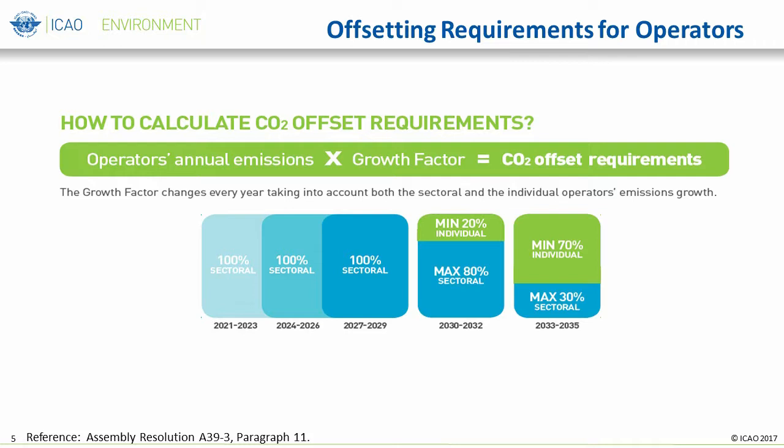However, from 2030 through 2032, a more dynamic approach will be implemented, where at least 20% of the aircraft operators' emissions growth will be used in calculating the operator's offsetting requirements in a given year. And from 2033 through 2035, the percent will increase to at least 70% use of the individual approach. The next two slides will illustrate the formula that will be used to calculate the operator's requirements in a given year.